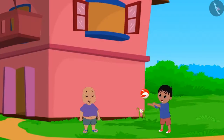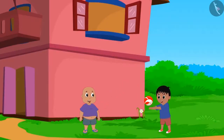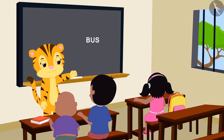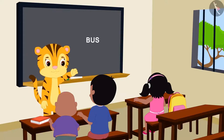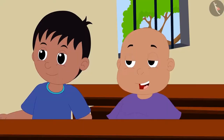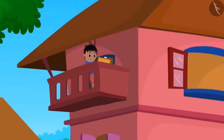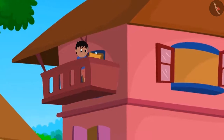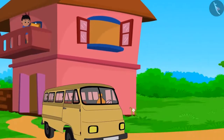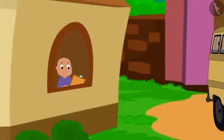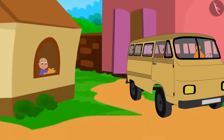Raju and Bablu are best friends. In the classroom, their teacher Mrs. Khanna asked them to draw a picture of a bus as homework. Both of them went home. They looked out from the windows of their house and began to draw the picture of a bus parked in their lane.